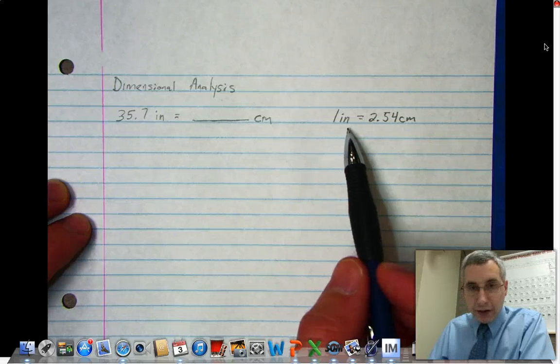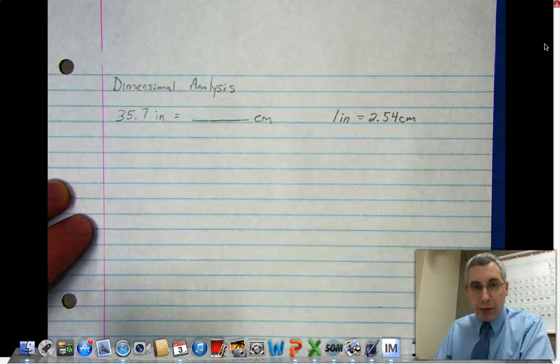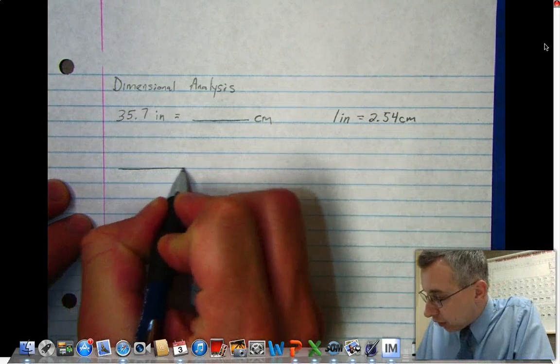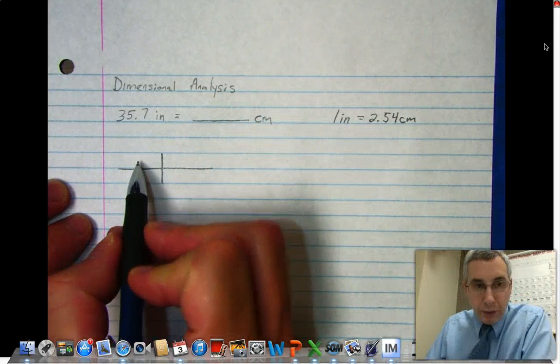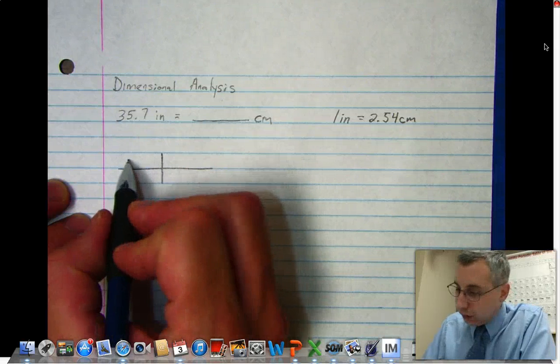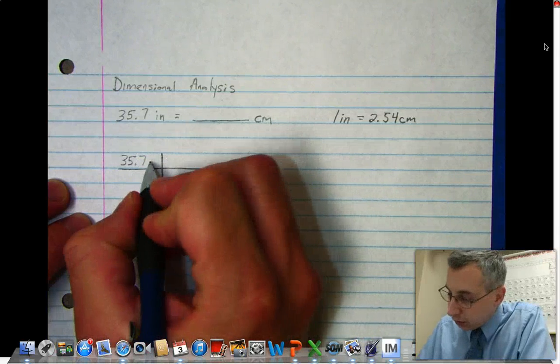Here we know what the question is: how many centimeters are in 35.7 inches, and we know a conversion factor. Now we will make the T-chart, which is what dimensional analysis is all about. The upper left box is where you put what you know, what you've been given, so here it's 35.7 and you must put the unit inches.